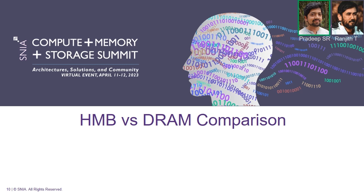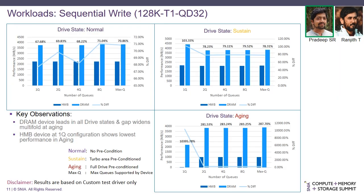Moving to the results: first we compare HMB versus DRAM with full HMB size allocated. Results are represented for each workload across three different drive states: normal with no precondition, sustained with turbo area preconditioned, and aging with full drive preconditioned. In the case of sequential write with 128K chunk size, 1 thread, and queue depth 32, when varying the number of queues, the DRAM outperformed across all queue configurations and all drive states compared to HMB. Especially in the aging state, DRAM outperformed by a large margin.